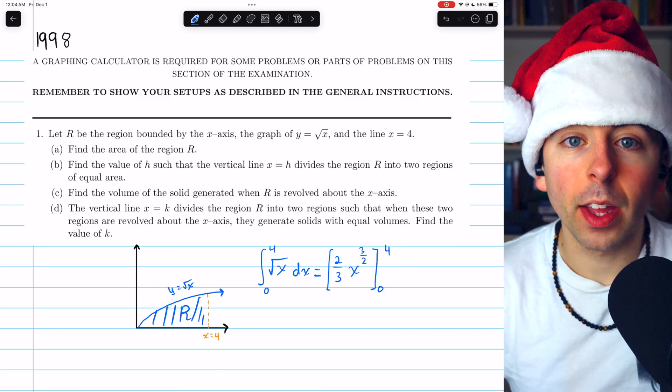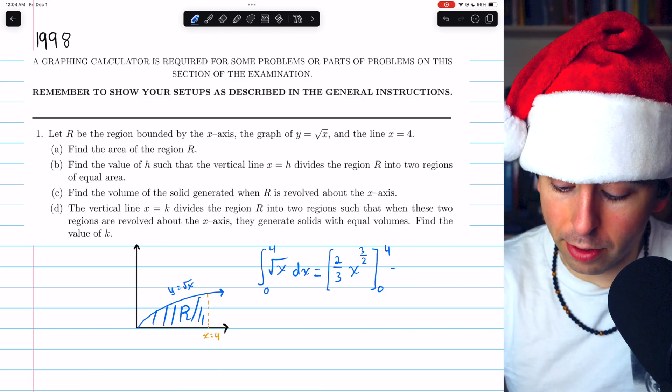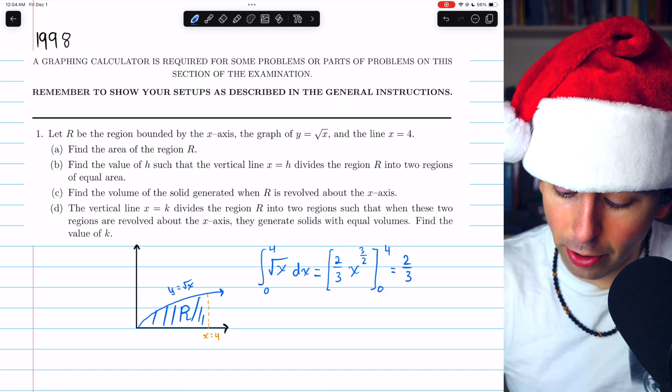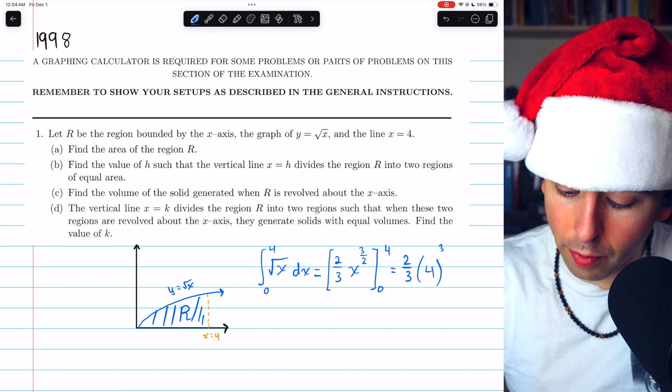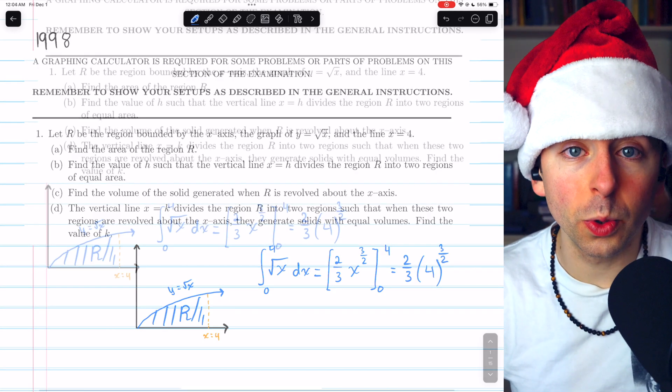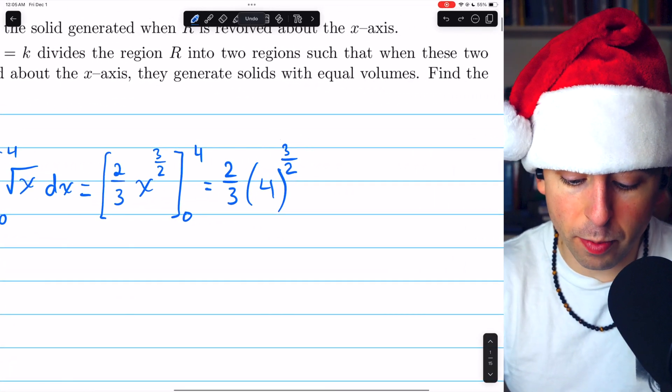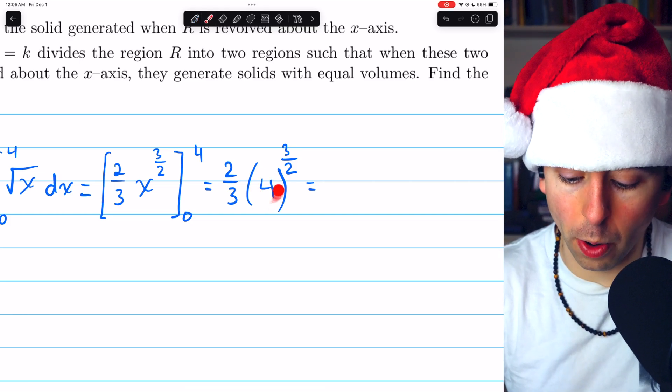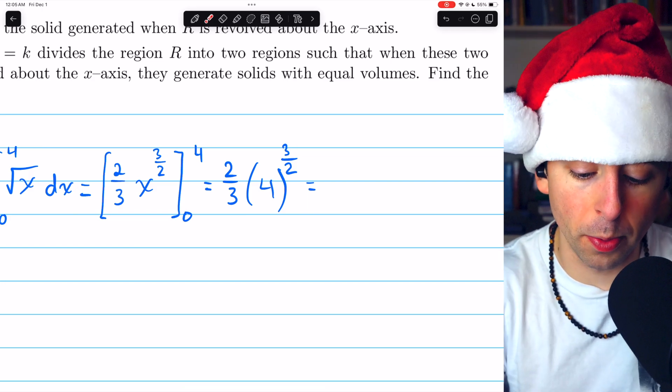That's the integral. And we're evaluating this from 0 to 4. Now, when we plug in 0, the lower bound, we're just going to get 0. So all we have to worry about is plugging in the 4. And we're going to have 2 thirds times 4 to the power of 3 over 2. Now, remember, a fractional exponent is kind of like two separate operations. It tells us we need to take the square root of 4 because of that denominator of 2. And then we need to cube the result.